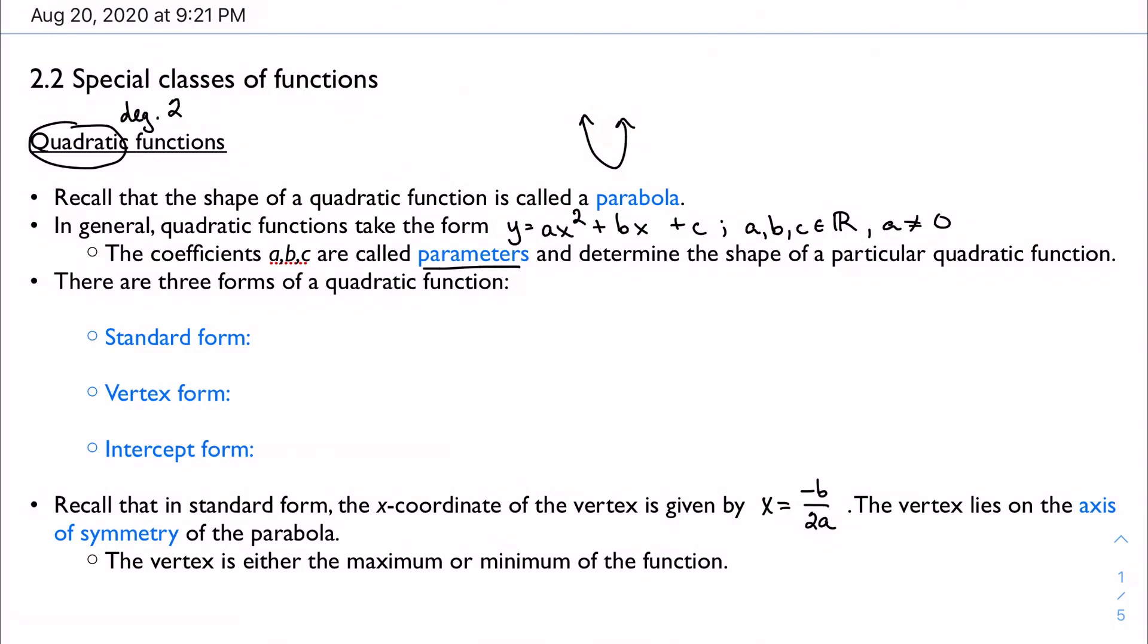So we're going to look at quadratic functions in three different ways, depending on what we're trying to use it for, and depending on the information we're given. And the first way we're going to look at it is just standard form, and that's equivalent to just the general form that I talked about earlier. And of course, as we remember from above, a, b, and c have to be real numbers, and a can't be 0.